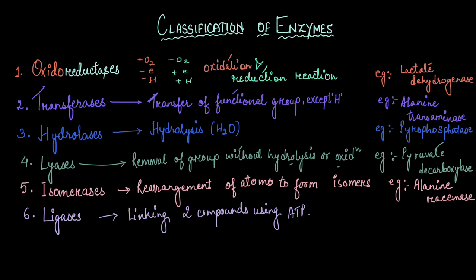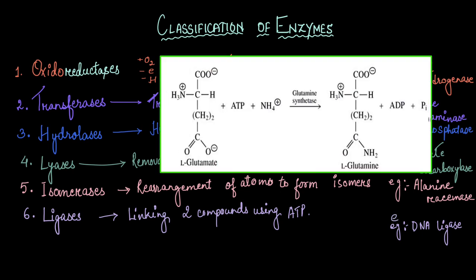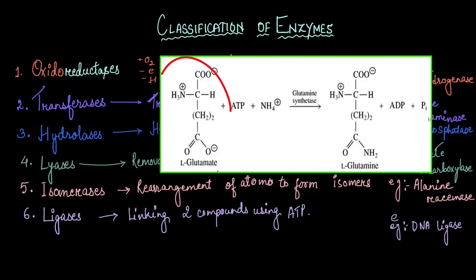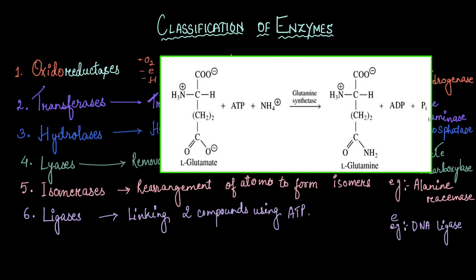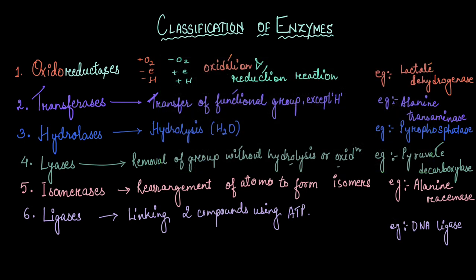Let's look at another example. Here we have two groups: glutamate and the amine group. These two groups are combined by a ligase enzyme, which in this case is glutamine synthetase. This enzyme with the help of ATP joins the amine group to the glutamate group, thus forming glutamine. So in this video we have learned about six different classes of enzymes.